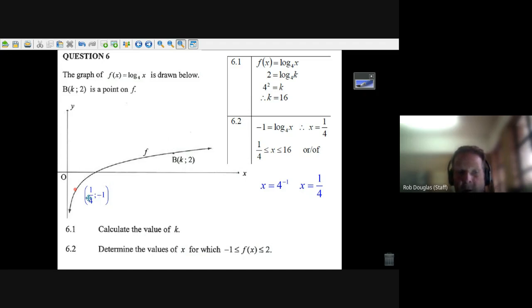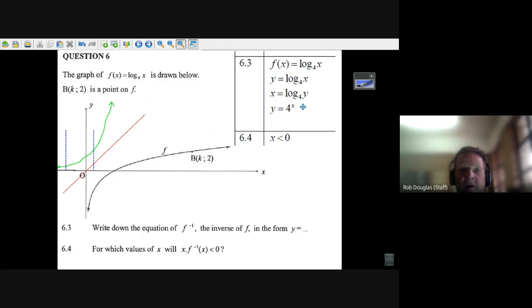And the x value that creates two, we did in the first part, is 16. So what are the values that are in between minus one and two? Well, they're the values in between the x values, in between 16 and a quarter. And that's how it works.